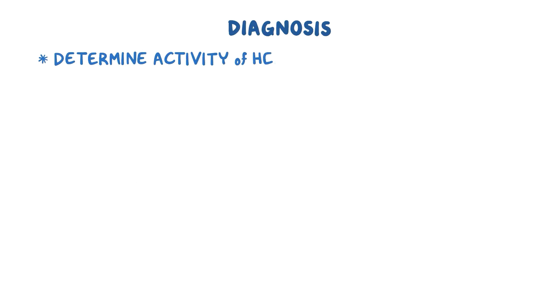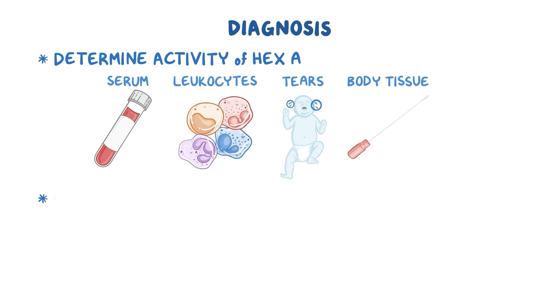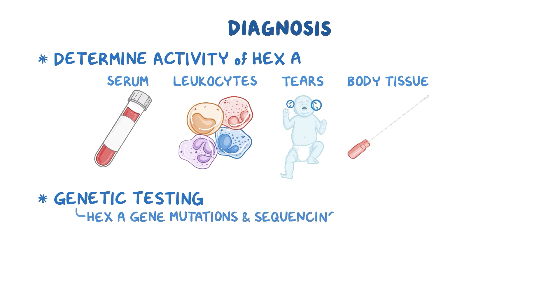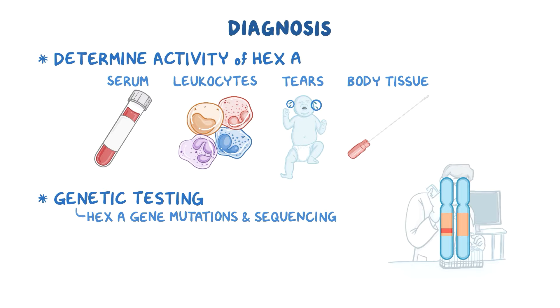Diagnosis of TSD is done by determining the activity of HEXA in serum, leukocytes, tears, or any other body tissue. Genetic testing for HEXA gene mutations and sequencing of the HEXA gene are used for diagnosis and heterozygous carrier detection.